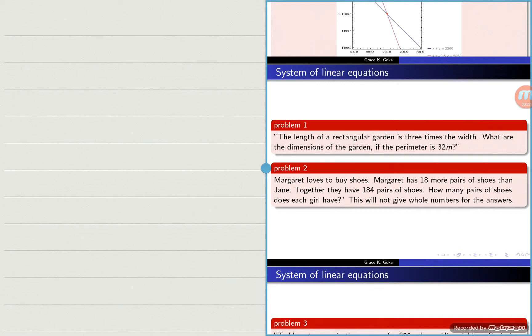The first problem that we'll be looking at is problem number one, and it says the length of a rectangular garden is three times the width. What are the dimensions of the garden if the perimeter is 32 meters?